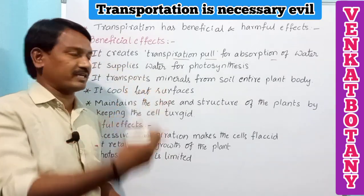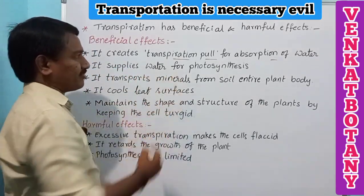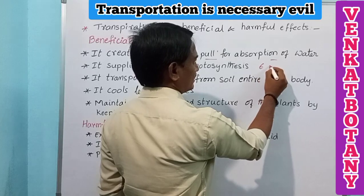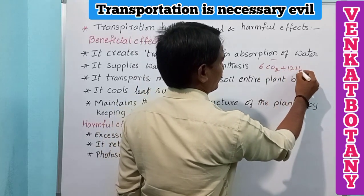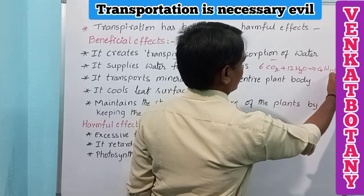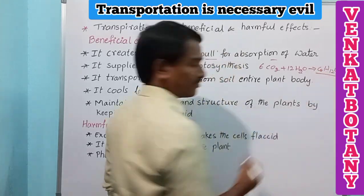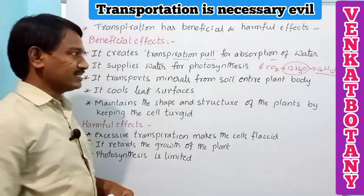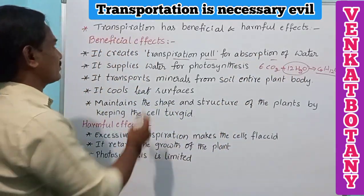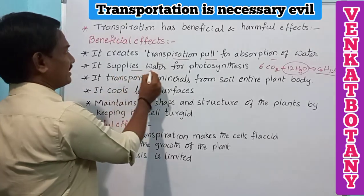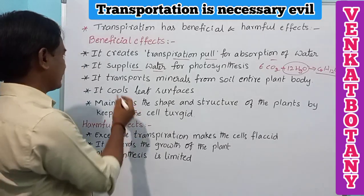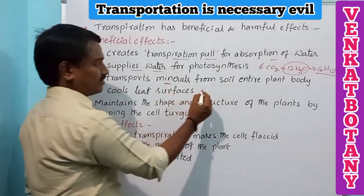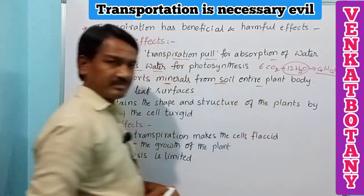It supplies water for photosynthesis. According to the photosynthesis formula, 6CO2 + 12H2O gives rise to C6H12O6. So for the formation of carbohydrates, it requires 12 water molecules, and those water molecules are supplied through transpiration. It also transports minerals along with the water molecules from soil to the entire plant body.